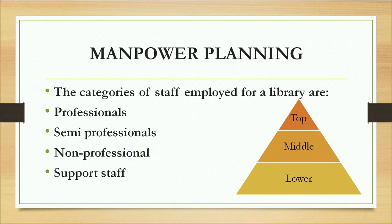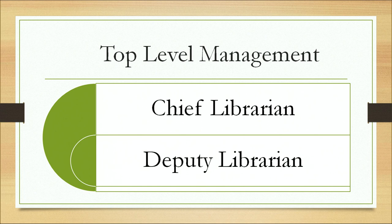The categories of staff employed in libraries are professionals, semi-professionals, non-professionals, and supporting staff, corresponding to top, middle, and lower levels. At the top level, qualified library and information professionals are required — usually professionals with good years of experience who carry out functions including planning, policy and decision making. They set procedures and practices, exercise control, and discipline the library. The designation at this level may vary, but in general there would be a chief librarian or a deputy librarian functioning at the top level.